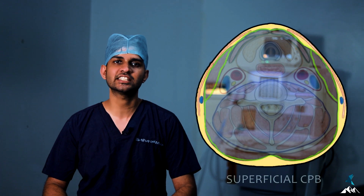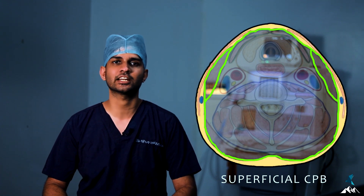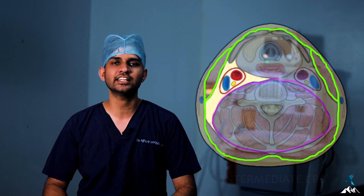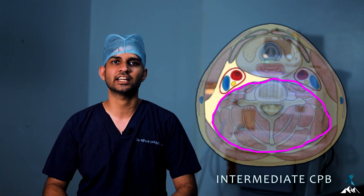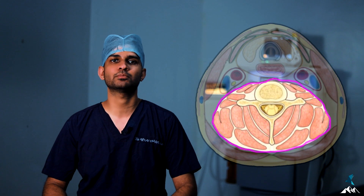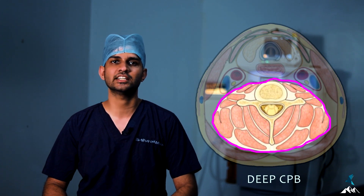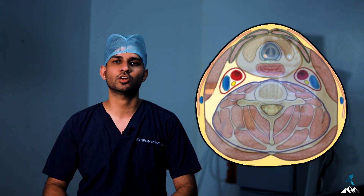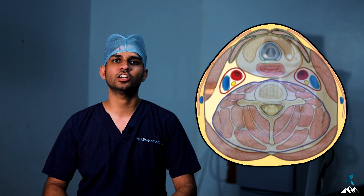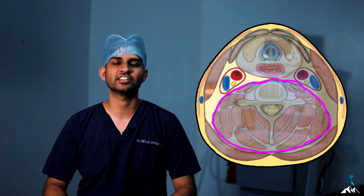Any injection of local anesthetic superficial to the investing layer is called a superficial cervical plexus block. Any local anesthetic injected between the investing layer and the prevertebral or perivertebral layer is called an intermediate cervical plexus block. Any local anesthetic injected deep to the prevertebral or perivertebral layer is called a deep cervical plexus block. In this tutorial, we will see the superficial and intermediate cervical plexus block — meaning we inject all local anesthetic superficial to the prevertebral layer.